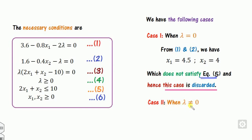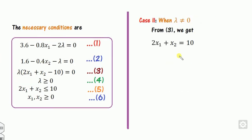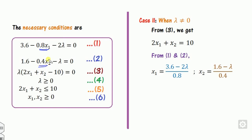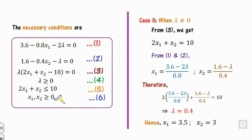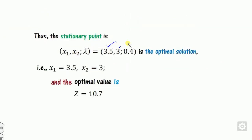Case 2: λ ≠ 0. From equation 3, 2x1 + x2 = 10. Using equations 1 and 2 to find x1 and x2, then substituting, we get λ = 4. This satisfies all conditions. Substituting λ back gives x1 = 3.5 and x2 = 3. Checking: 2(3.5) + 3 = 10, which is satisfied. Therefore the optimal solution is x1 = 3.5, x2 = 3, λ = 0.4, and the optimal value of the objective function is found by substitution.